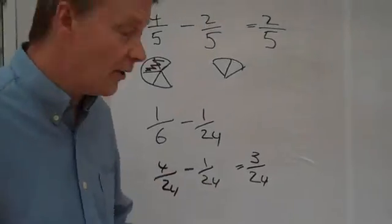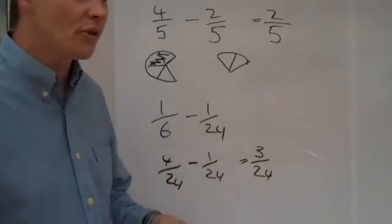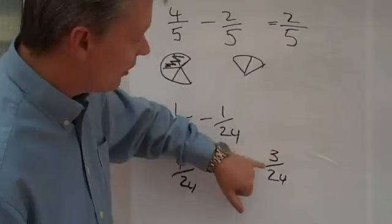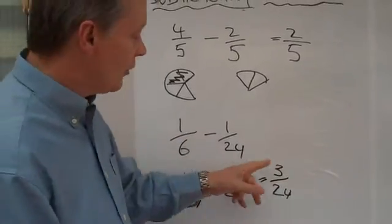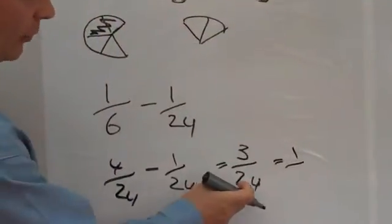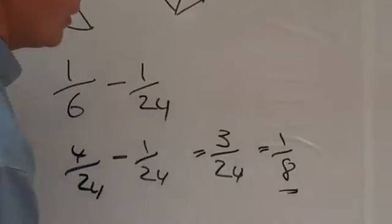Now, something that we can do also, is that we can reduce that down to the lowest possible number at the bottom, by dividing both top and bottom by three. So, if we divide three by three, we get one. If we divide twenty-fourth by three, we get eight.